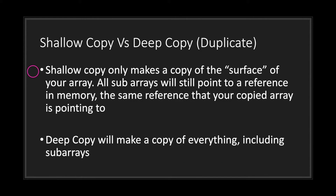This is where the duplicate function comes into play. Many times when you create a variable you do not want to share values between two different variables. The whole point of variables in most cases is isolation — meaning when you change one variable you should not be affecting other variables. The duplicate function comes with two choices: you can do a shallow copy or you can do a deep copy. A shallow copy only makes a copy of the surface of your array, meaning all sub arrays will still point to the same reference in memory. A deep copy will make a copy of everything, including sub arrays.